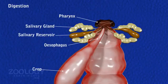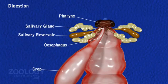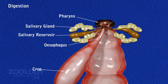Digestion. In the salivarium of the mouth cavity, crushed food meets with salivary secretion. Saliva lubricates food while its digestive enzyme hydrolyses the starchy matter of food. Lubricated food is then pushed into the pharynx through the mouth with the help of the labium.